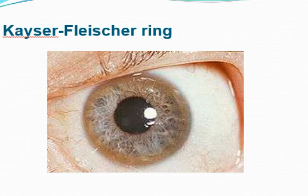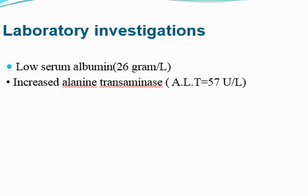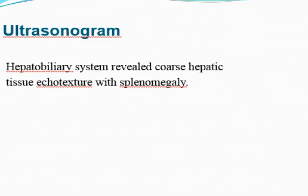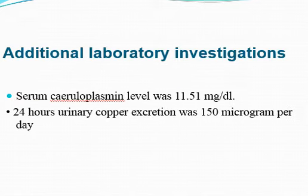This slide shows the KF ring. The KF ring is present in 50% of patients with liver disorder and 90% of patients with neurological involvement. Lab investigations show low serum albumin level and increased liver transaminases. Ultrasound of the hepatobiliary system reveals coarse patchy echotexture with splenomegaly. Liver scan shows non-uniform radiotracer distribution in the liver and increased bony uptake. Additional lab investigations: serum ceruloplasmin level was more than 11.51 mg per dL and 24-hour urinary copper excretion was 150 micrograms per day.